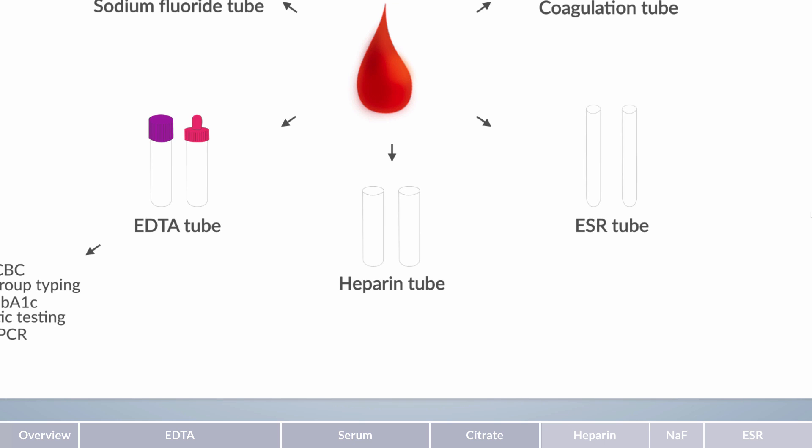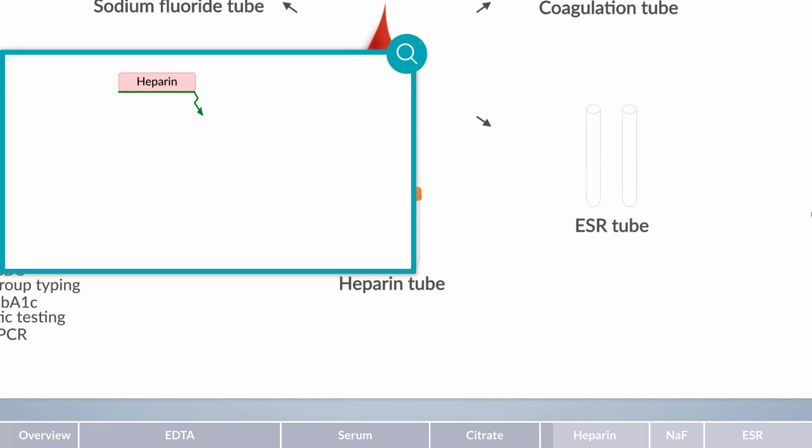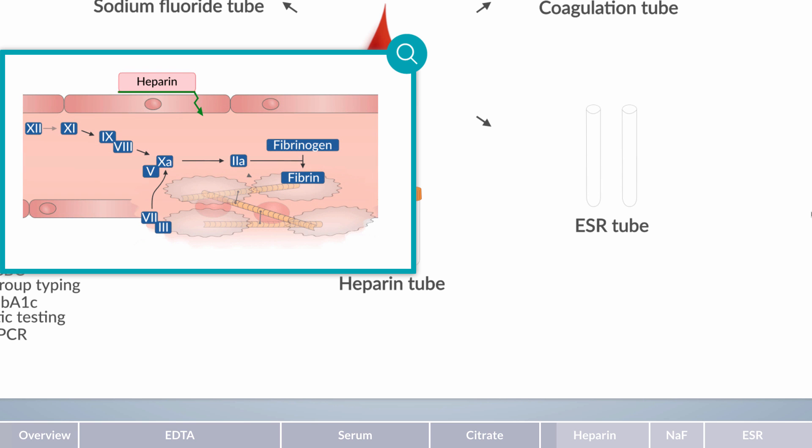The heparin tube has a green cap in accordance with the international standard and an orange cap in accordance with the European standard. It contains heparin. Heparin is a polysaccharide that acts as an anticoagulant and forms a complex with antithrombin-3. Antithrombin-3 inhibits blood clotting by binding to the activated forms of factors 10 and 2. However, as a complex, antithrombin-3 and heparin inactivate factors 10 and 2 more rapidly.